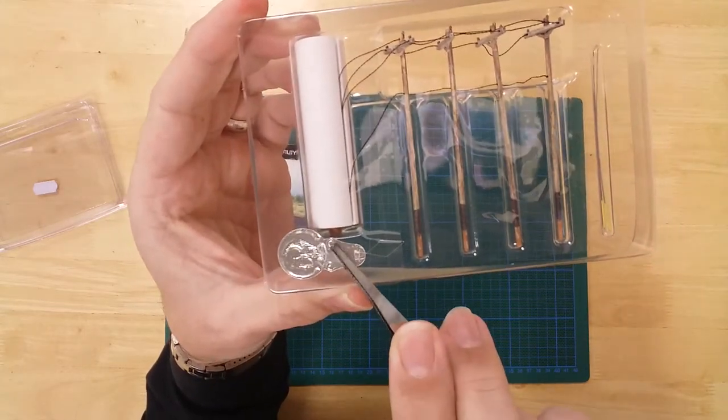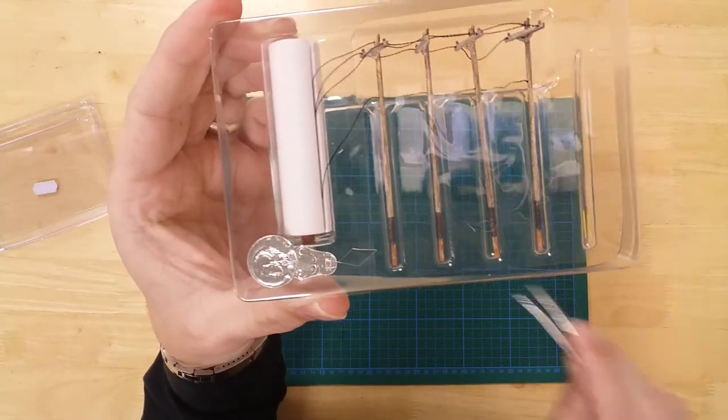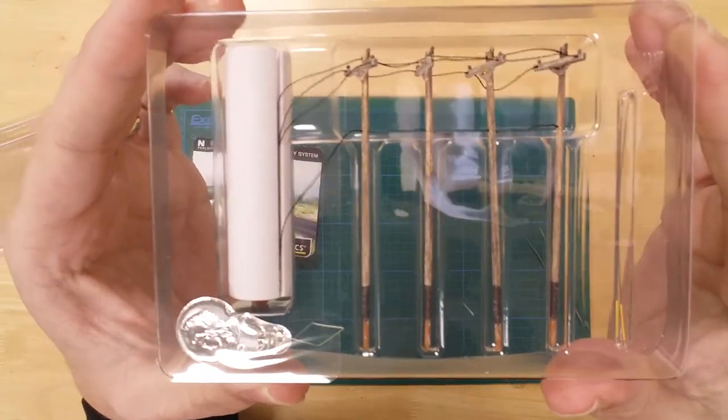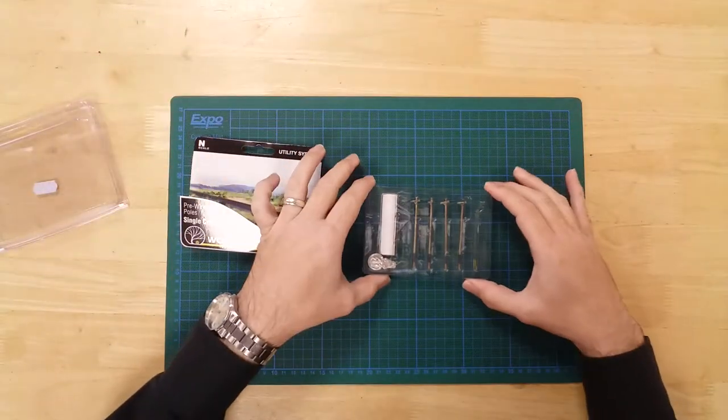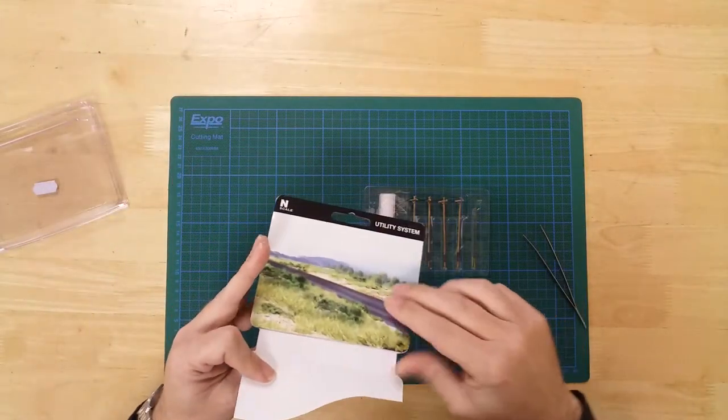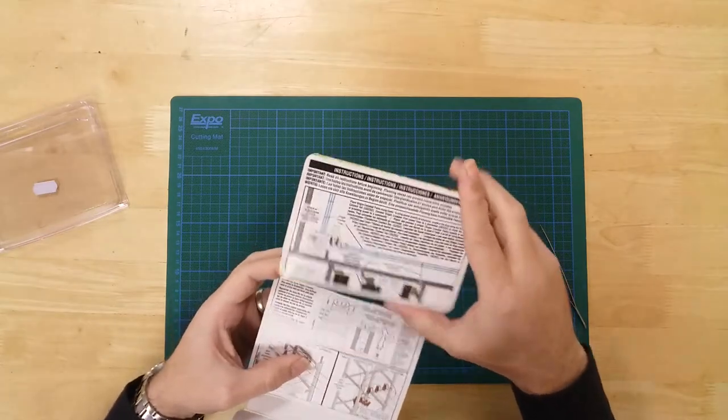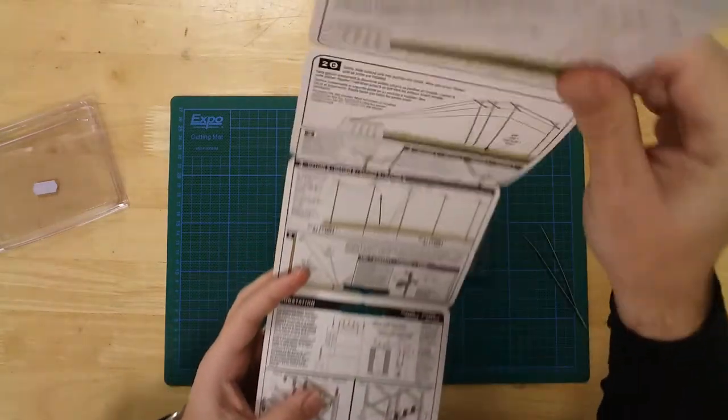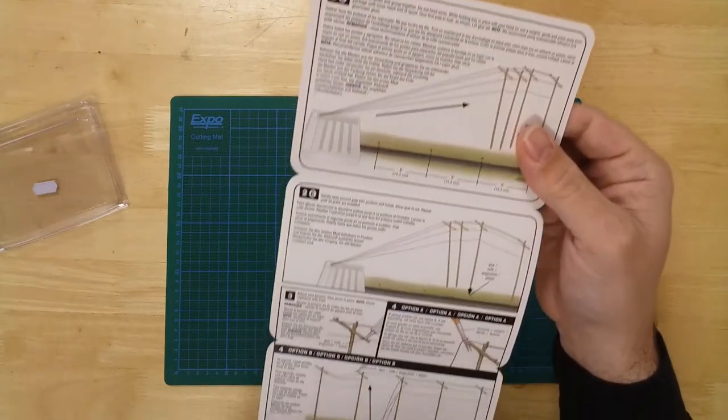The set also contains a needle threader to help with installation and two guy wires to add further detail and realism. Full color instructions are included to help with the installation.